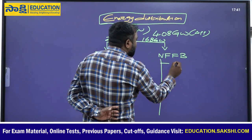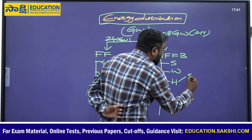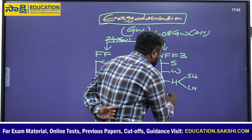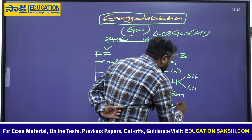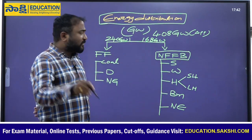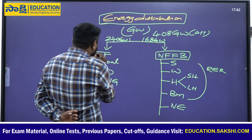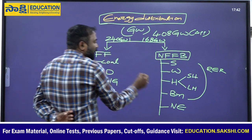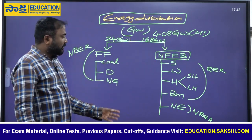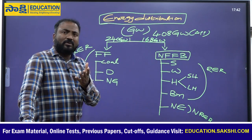The remaining approximately 168 gigawatts comes from non-fossil fuel based sources including solar energy, wind energy, hydro energy - which is further divided into small hydro and large hydro power stations - biomass, and nuclear energy. Nuclear energy, although non-fossil fuel based, falls under non-renewable energy resources, not renewable energy resources.